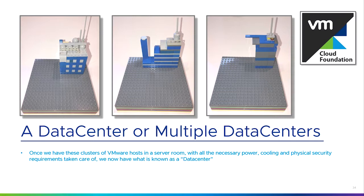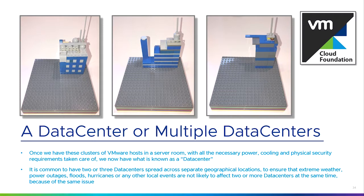Once we've got all these clusters with all the necessary power and cooling, we have what we call the data center. It's good practice to have two or three data centers in different geographical locations to make sure that extreme weather, power outages, floods, hurricanes, or any local events do not affect two or more data centers at the same time. If we have a power outage at data center one, or a flood at data center two, or a hurricane at data center three, we make it unlikely that we'll lose all of our data centers simultaneously. We spread data centers out for redundancy and resiliency.